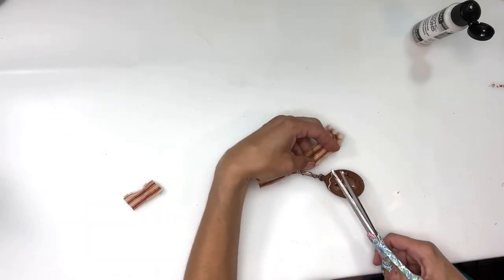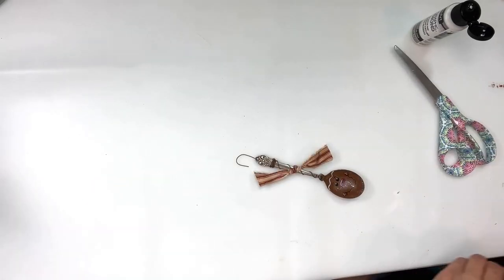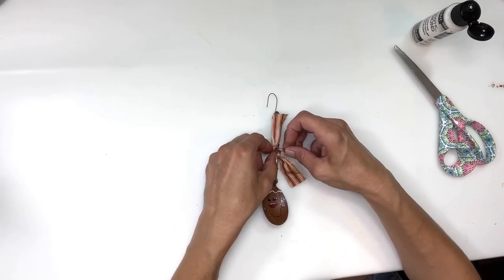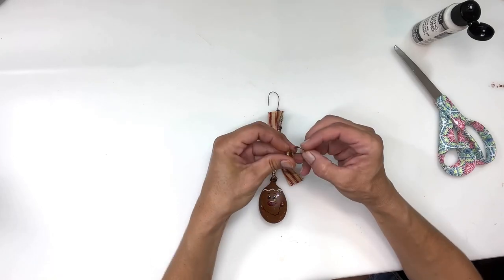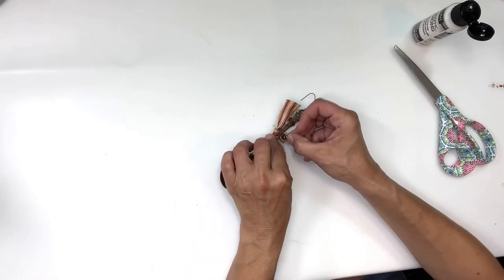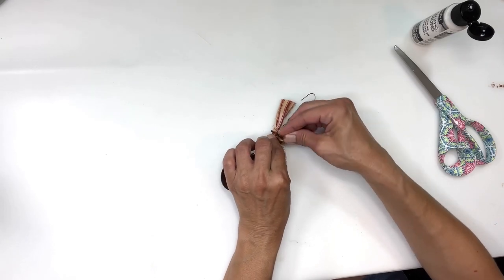Then I'm going to add a rusty bell and a rusty safety pin right to the center of that. So I'm just going to push that safety pin through, add my bell, and then close it up and this is done.